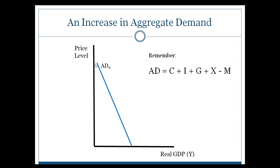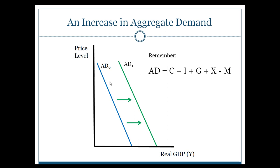Here you can see a picture of how this works. When we look at our aggregate demand curve, it's a straight line downward sloping — this would be a particular period of time. If something happened that caused more spending to occur, any one of those factors could lead to that. If consumption goes up, investment goes up, government spending goes up, or exports go up, the aggregate demand curve will push rightward, giving you a higher level of spending.